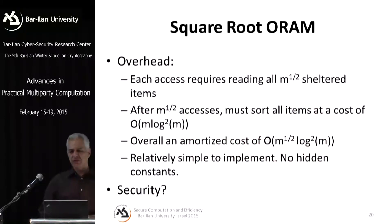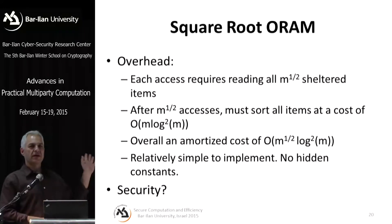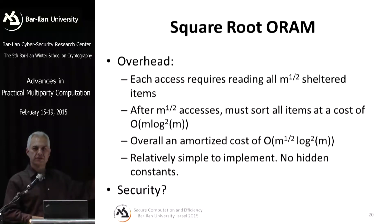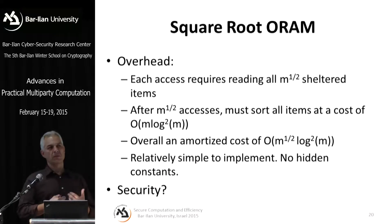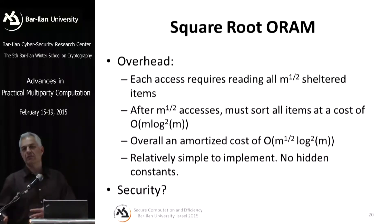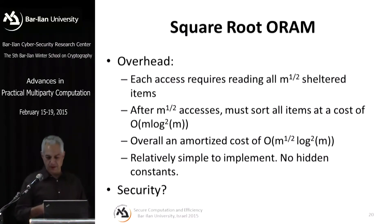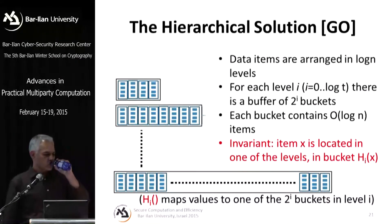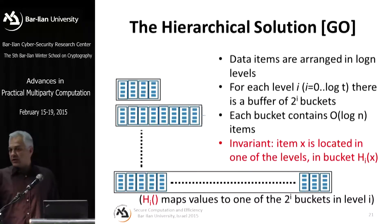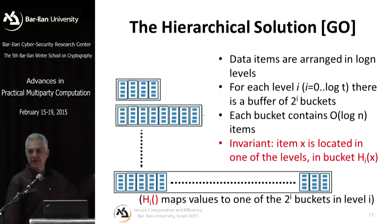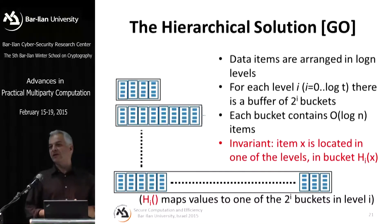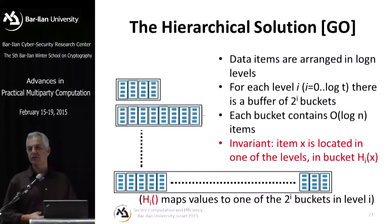Regarding security: what does the server see? It sees a scan of the shelter — always the same scan — then access to a new random location in main memory, then another scan of the shelter. This is completely oblivious to which item the client wanted. Once in a while there's an oblivious sort, which is also oblivious. Whatever the server sees is independent of the actual data. The simulation proof is easy: simulate a scan, then access a random item in main memory, then another scan. After each √m accesses, the client changes the permutation and does a new sort.